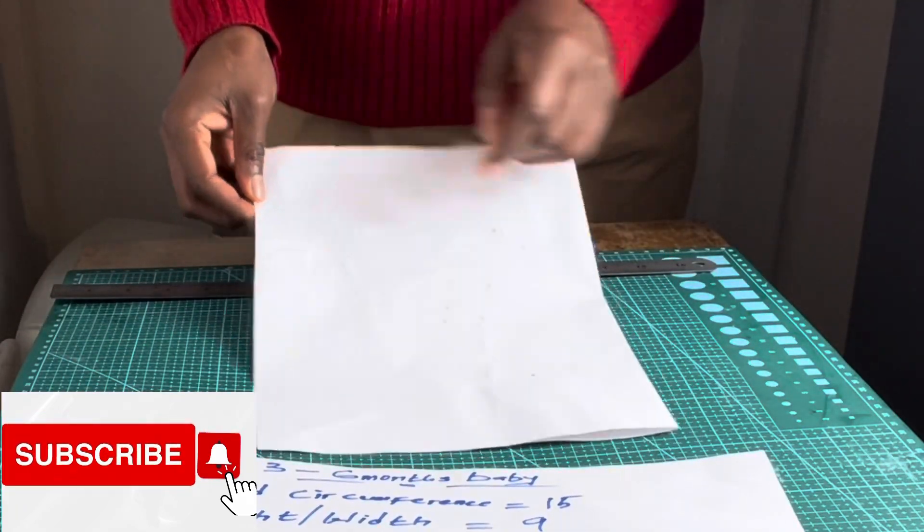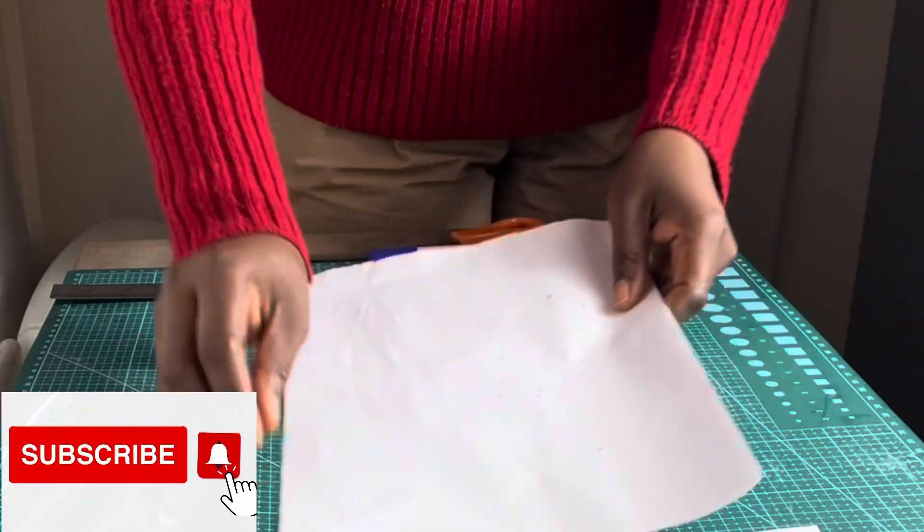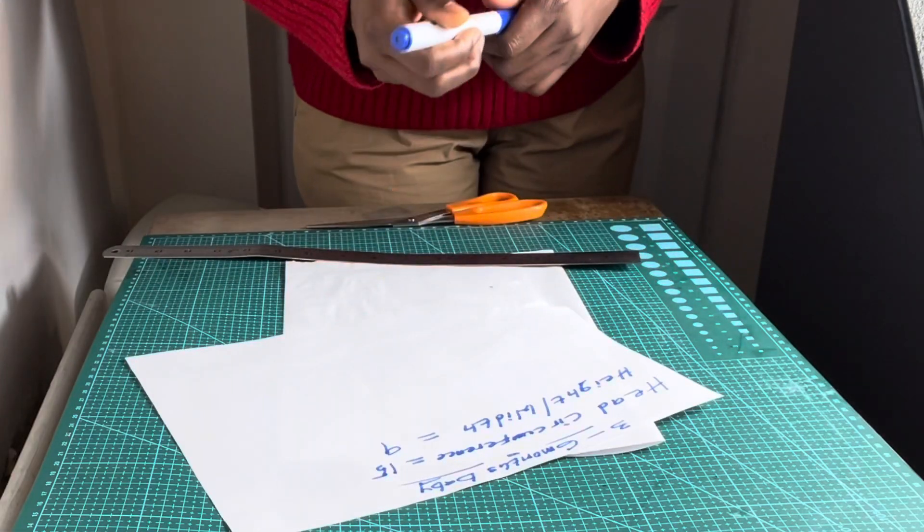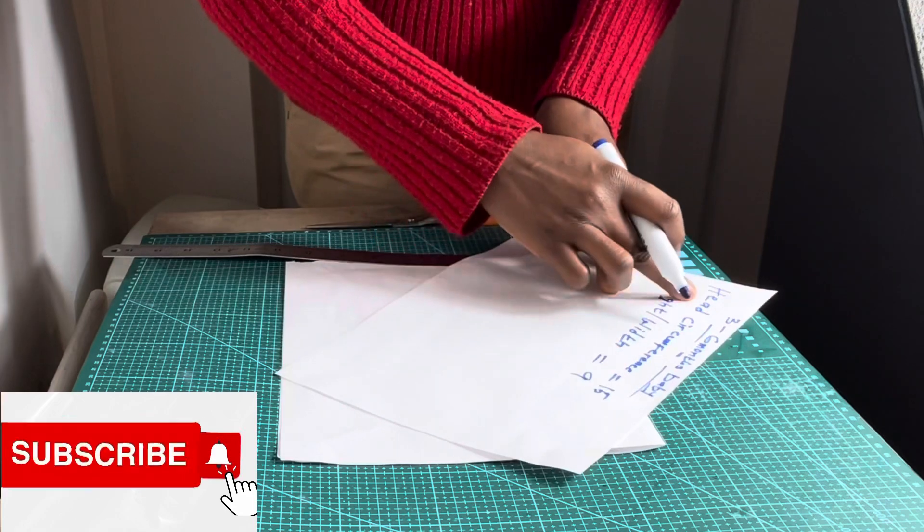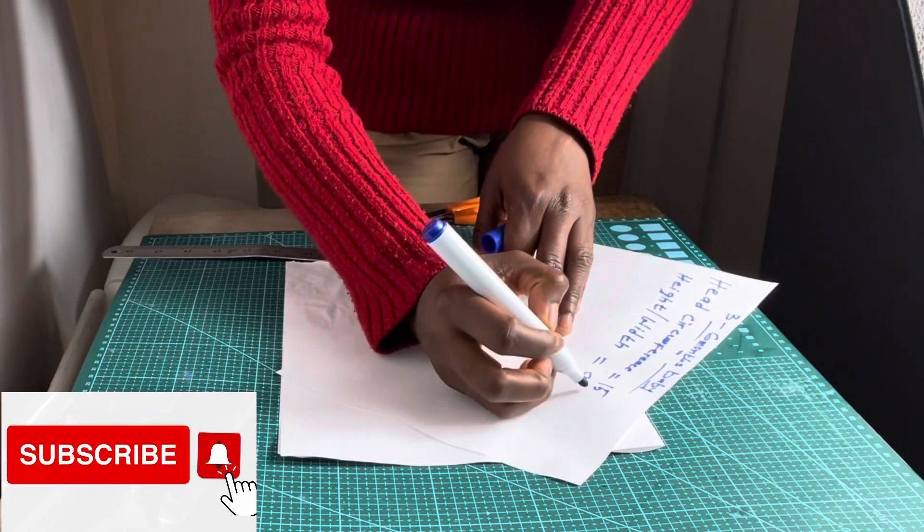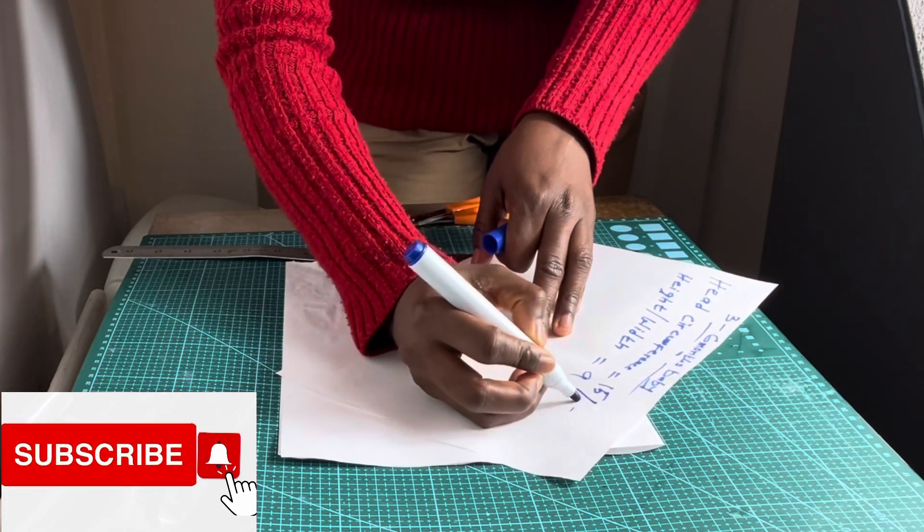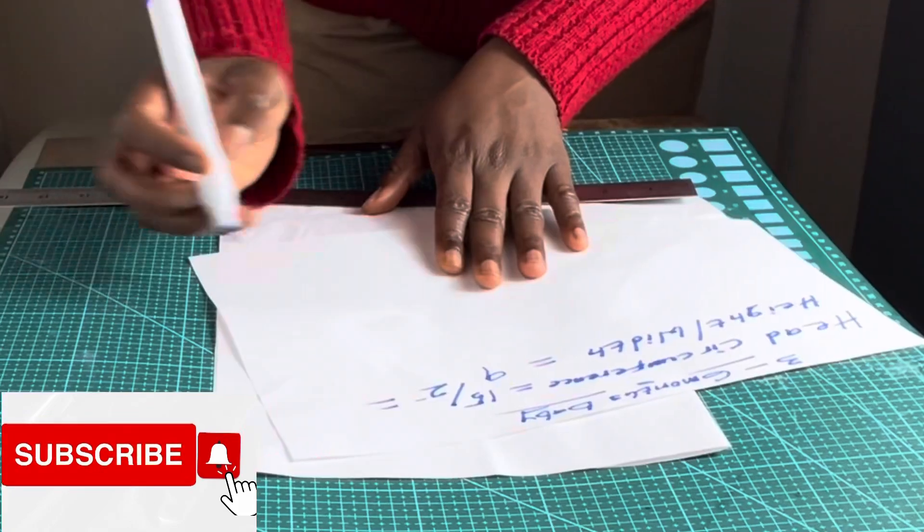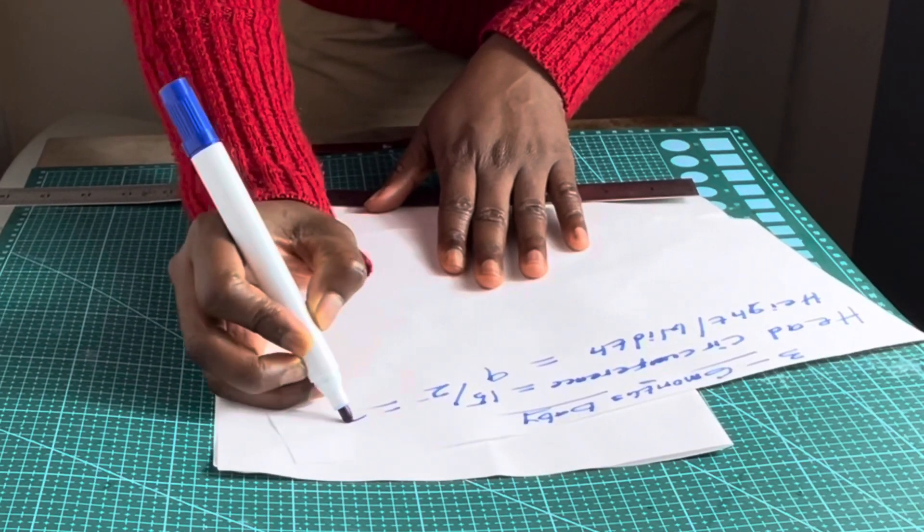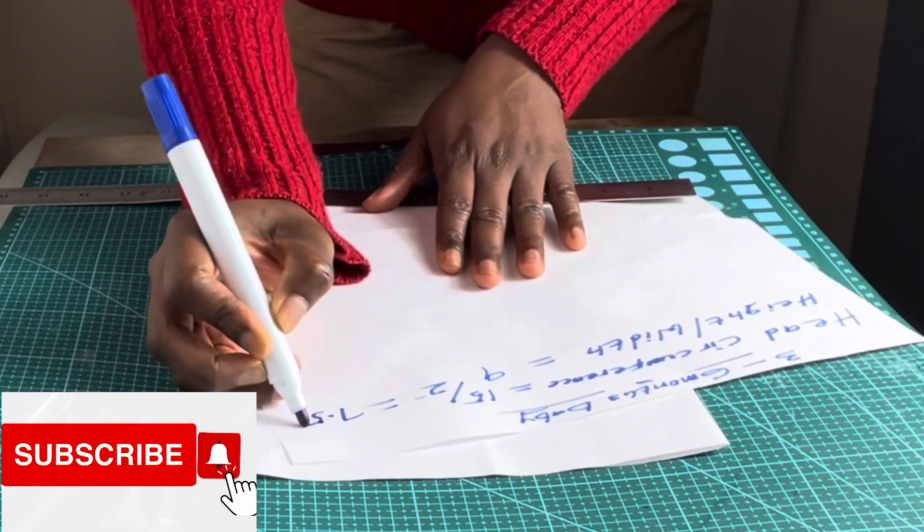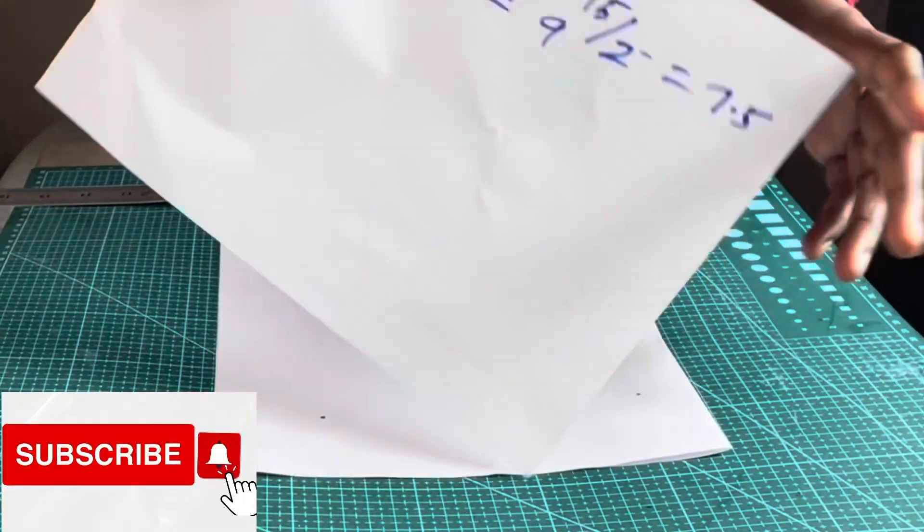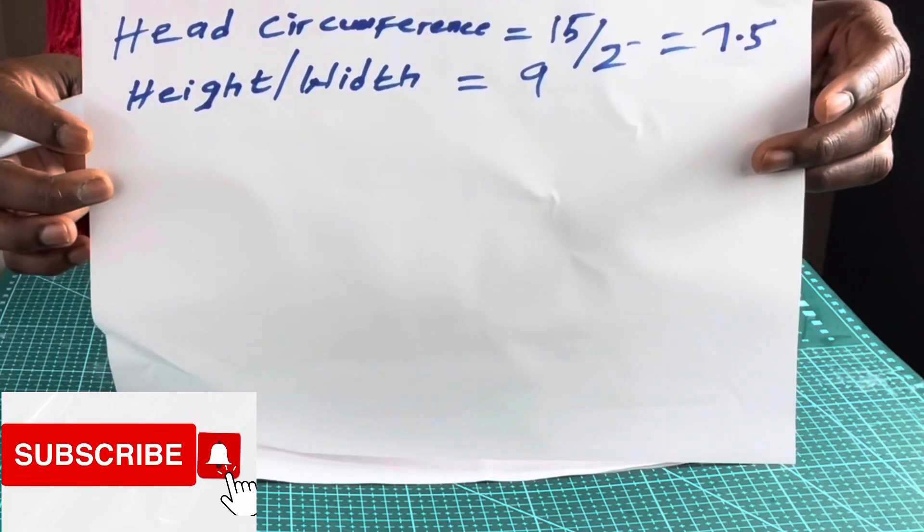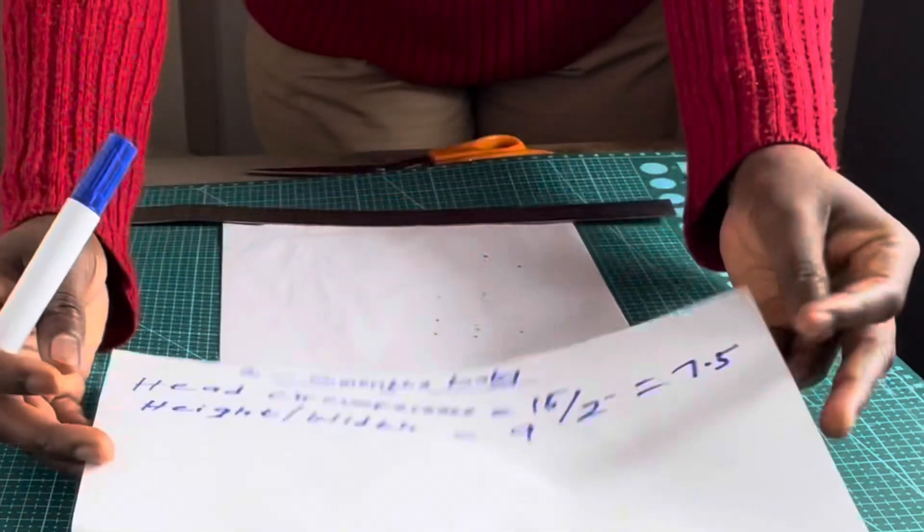The next thing I will be doing is dividing my head circumference into two. 15 divided by 2 will give me 7.5. So that will be 7.5, look at that. I divide 15 by 2 and the answer gives me 7.5, so I'm going to mark 7.5 at this end.